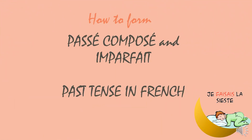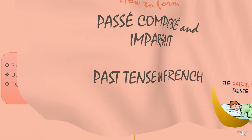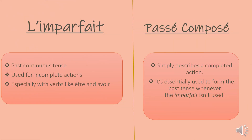Bonjour, in this video I am going to talk about how to form passé composé and imparfait, i.e. past tense in French. L'imparfait is past continuous tense and it's used to describe incomplete actions. It's especially used with verbs like être and avoir, while passé composé on the other hand is simpler to know and use — it simply describes a completed action and is essentially used to form past tense whenever imparfait isn't used.